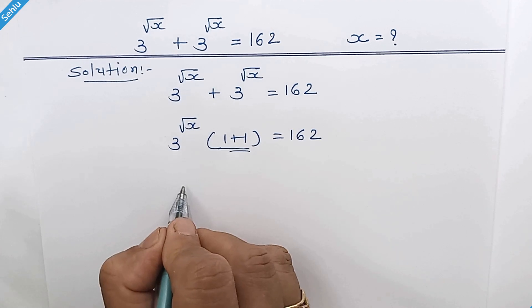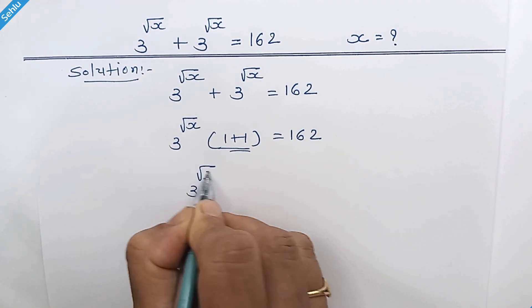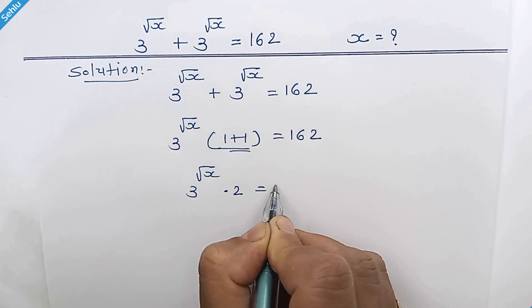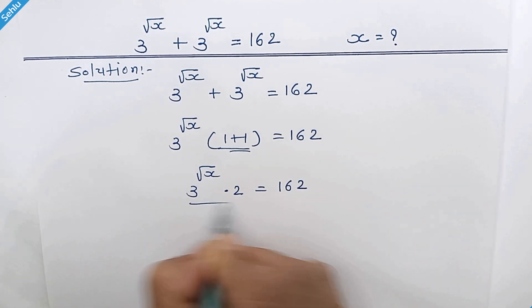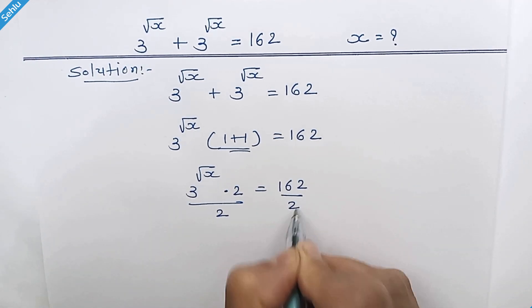This is 2, so we have 3^√x times 2. Divide by 2 both sides, so this 2 gets cancelled out.